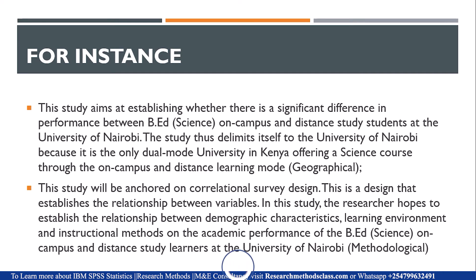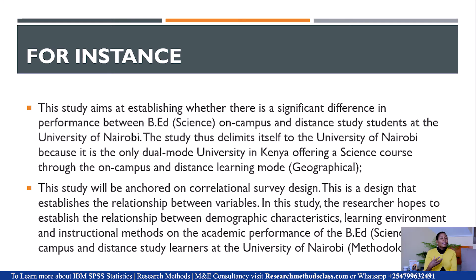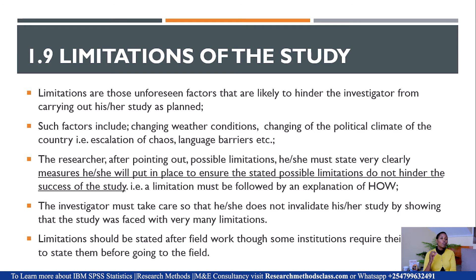The second type is methodological delimitation. For example, the study will be anchored on correlational survey design because the researcher wants to establish the relationship between demographic characteristics, learning environment, and instructional methods on academic performance. The researcher did not select the method just for the sake — there is a reason why correlational survey was used rather than cross-sectional survey. Please remember: every delimitation, whether geographical or methodological, must be accompanied by an explanation of why. We don't do research out of convenience.